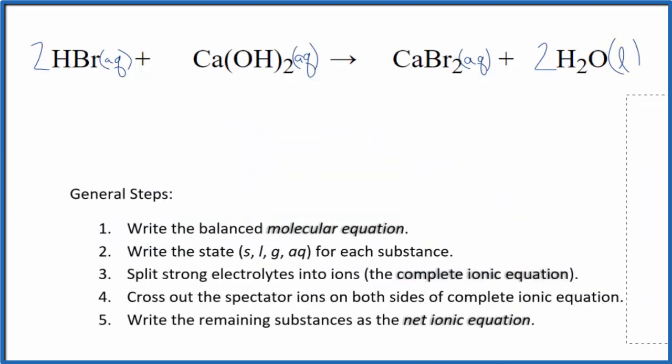Next, we'll split strong electrolytes apart into their ions. So we're talking about the complete ionic equation. Strong electrolytes have the aqueous after them. So hydrogens in group 1, that is 1 plus.